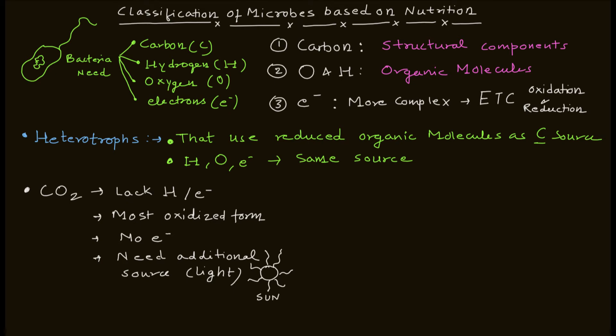And when you use light as a source and carbon dioxide as a carbon source, the organisms they are classified as autotrophs. So the definition of the autotroph is the organism that uses CO2, carbon dioxide, as the sole carbon source. Okay, we are defining these two categories based on their carbon source.